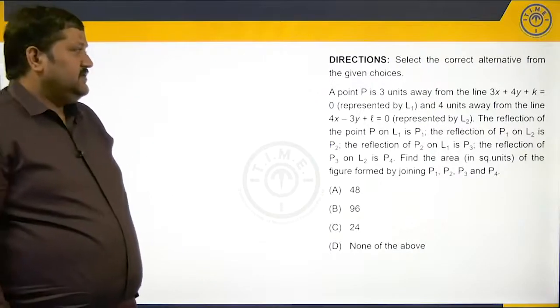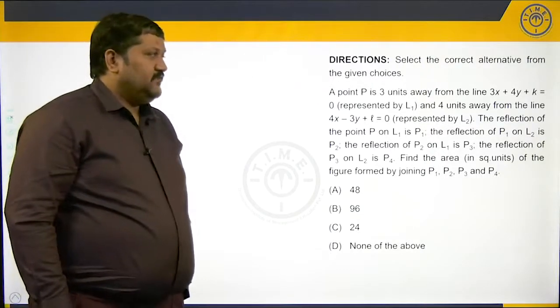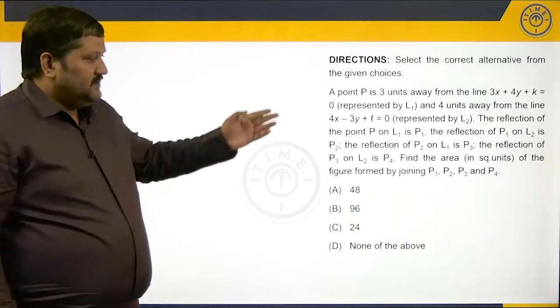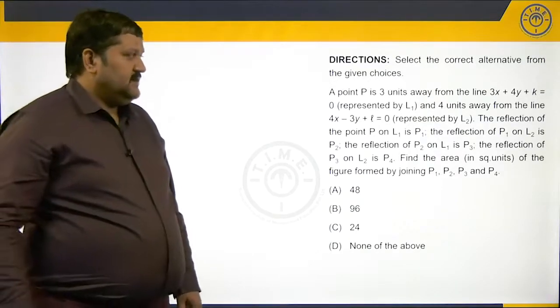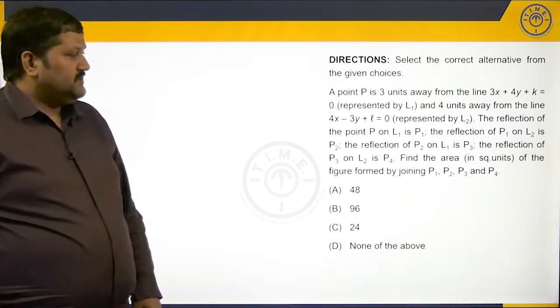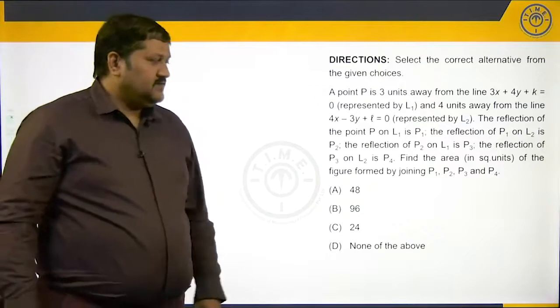A point P is 3 units away from the line 3x plus 4y plus k equals 0, which is represented by line L1, and 4 units away from the line 4x minus 3y plus L equals 0, represented by line L2.